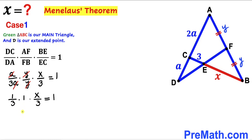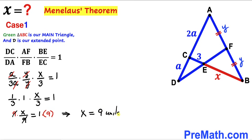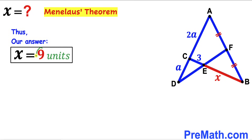Multiplying all terms gives us x divided by 9 equals 1. Multiplying both sides by 9 to isolate x, the 9s cancel, giving us x equals 9 units. So our final answer is x equals 9 units — that is the length of segment EB.